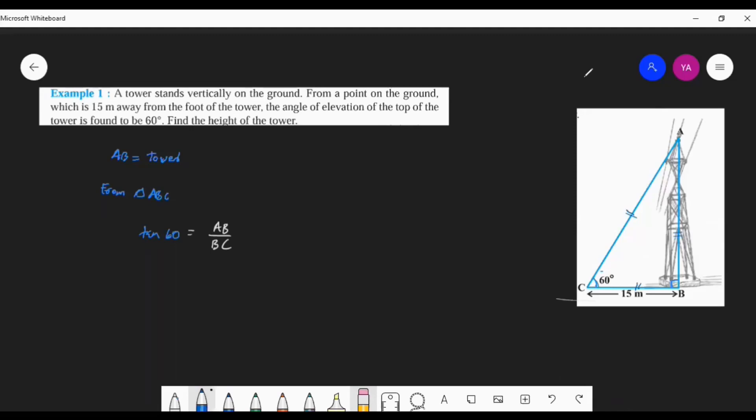So here we can apply the given values and the value of tan 60°. What is tan 60°? Root 3. Root 3 will come.